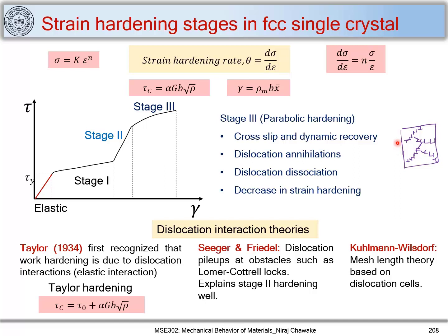Stage three is also called the parabolic hardening stage. Cross slip occurs from one plane to another — dislocations cross slip onto a different slip plane. If there is a dislocation of opposite sign on that plane, they attract and annihilate each other, decreasing dislocation density and reducing the strain hardening rate in stage three.